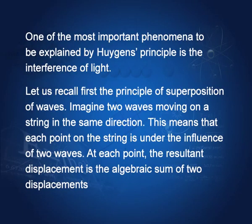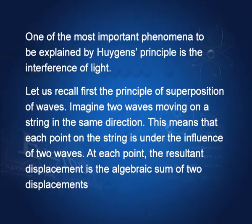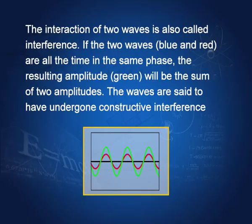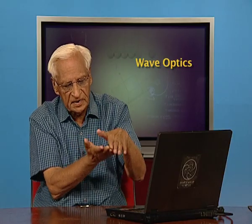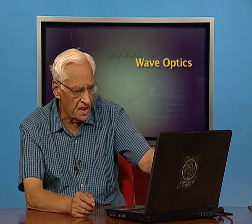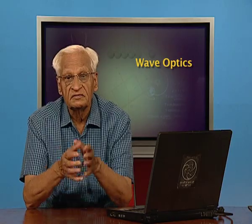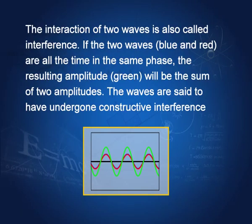I have taken a special case in which the two waves are of the same amplitude and in the same phase. At each point the displacement is the sum, so the amplitude of the resultant wave is twice the amplitude of each individual wave. The amplitudes get added and the displacement at each point gets added. The waves are said to have undergone constructive interference.